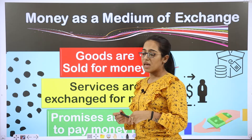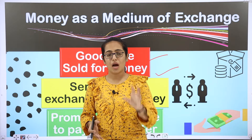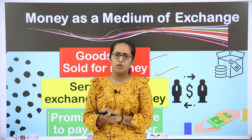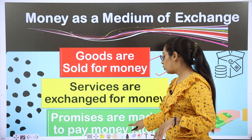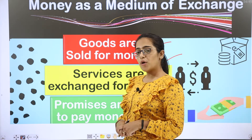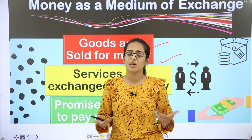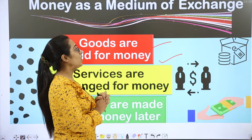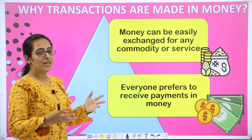For example, when you go to school, you are receiving a service — knowledge. You don't take a tangible thing home; you receive knowledge, and for that you pay fees. That is a service exchanged for money. And then there is credit — promises are made to pay money later. We promise to return the money after some time — that is credit.